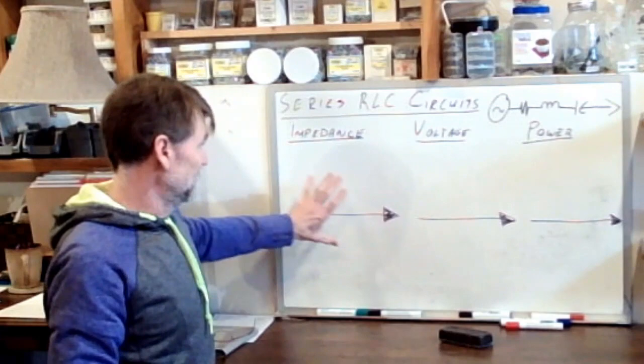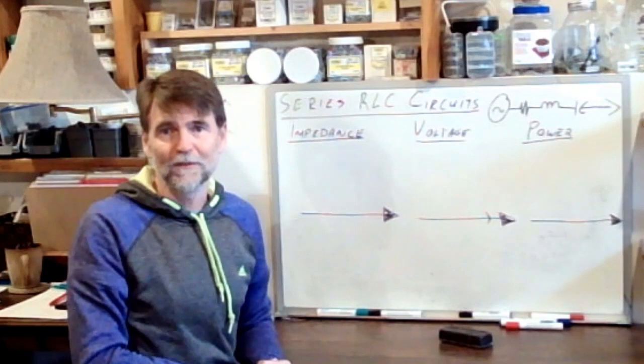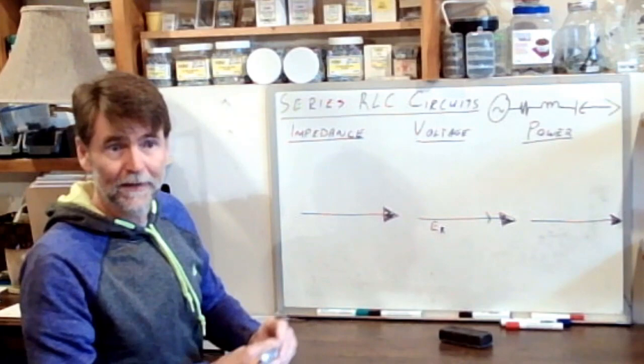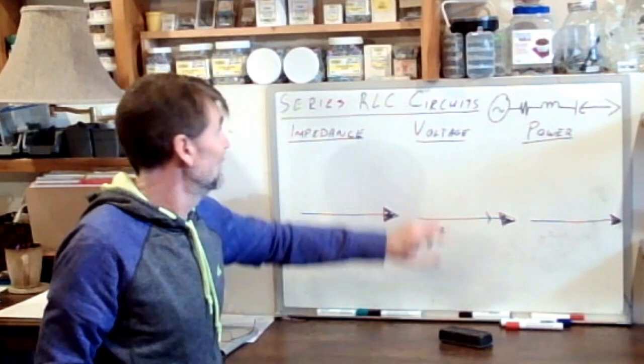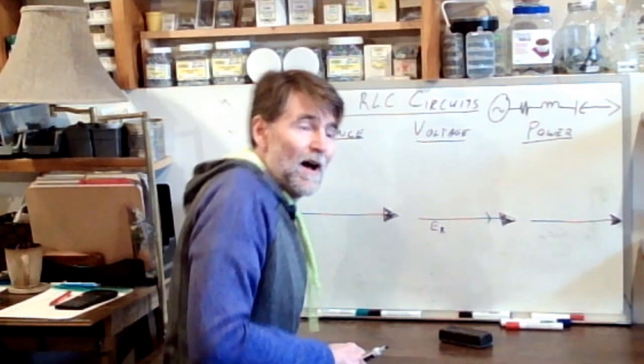Let's focus on the voltage, talk about what's happening here, understanding that once we get this triangle figured out, the other two are going to look exactly the same. First of all, we have a voltage vector that will be in phase with the current, and that represents the voltage drop across the resistor.